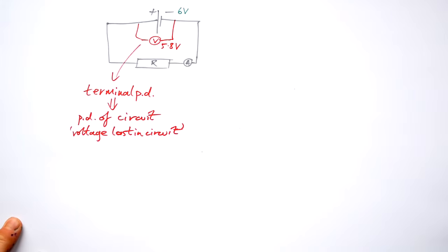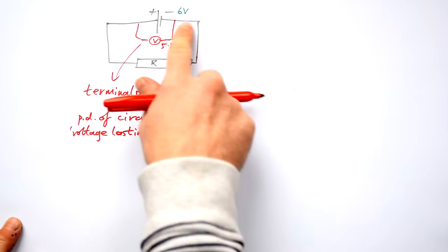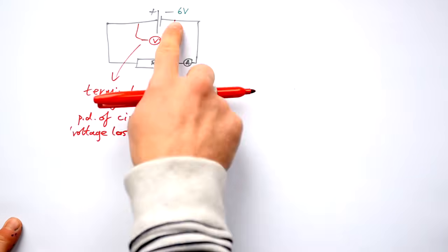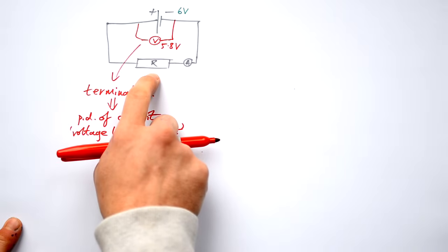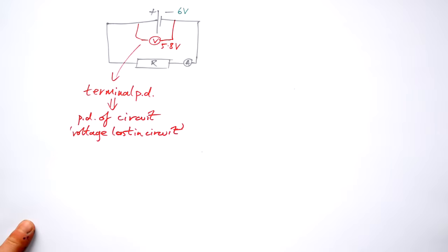Why are we not measuring the full six volts that the battery says that it has to offer? It's because some of that six volts is being lost in the battery before it even gets to the circuit to be used in the rest of the circuit, specifically in the load resistance here.